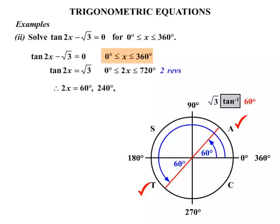Now that's for our first revolution. But we want two revolutions, okay? So we need to get another set of answers. The simplest way is to add the 60 degrees onto 360. So that's 420. And our other answer, 240, add that onto 360. 600 degrees.